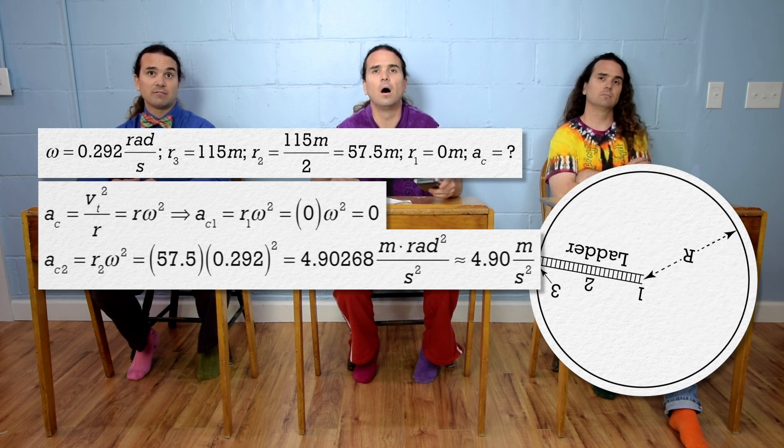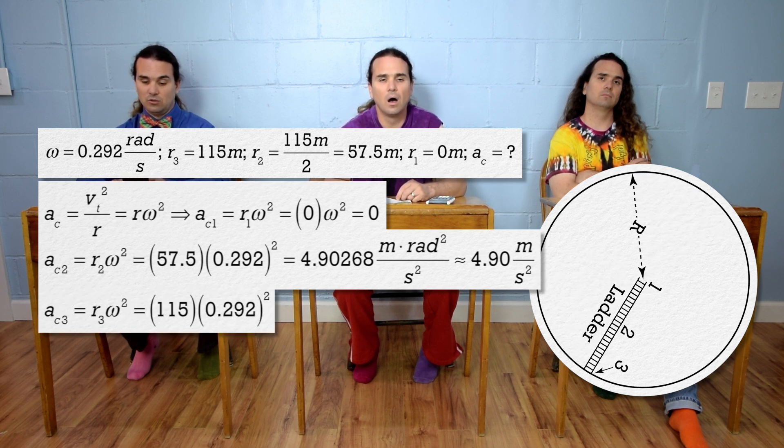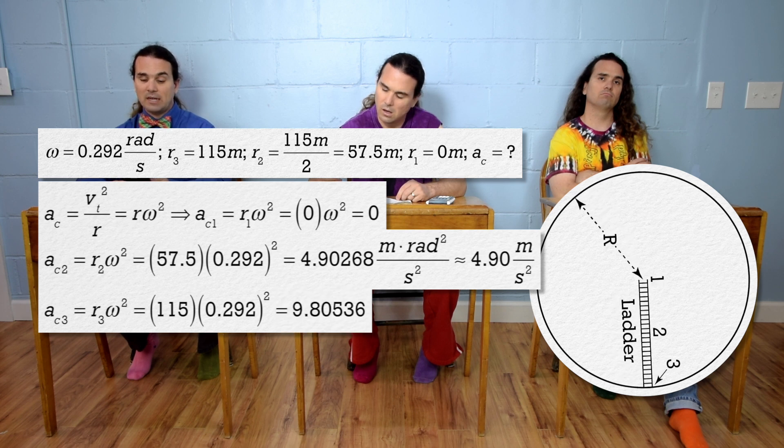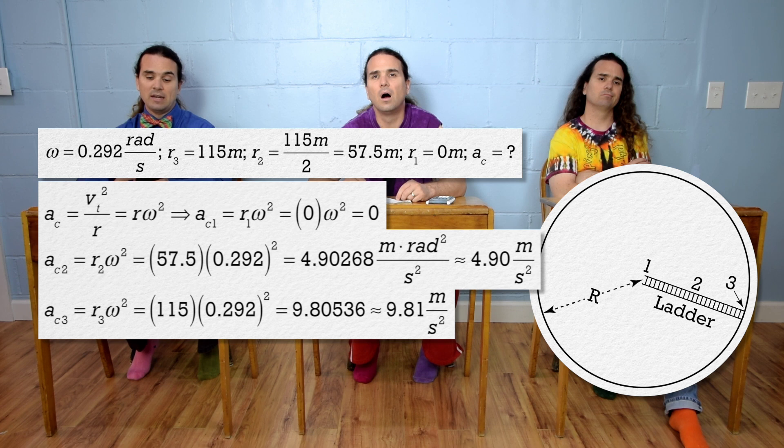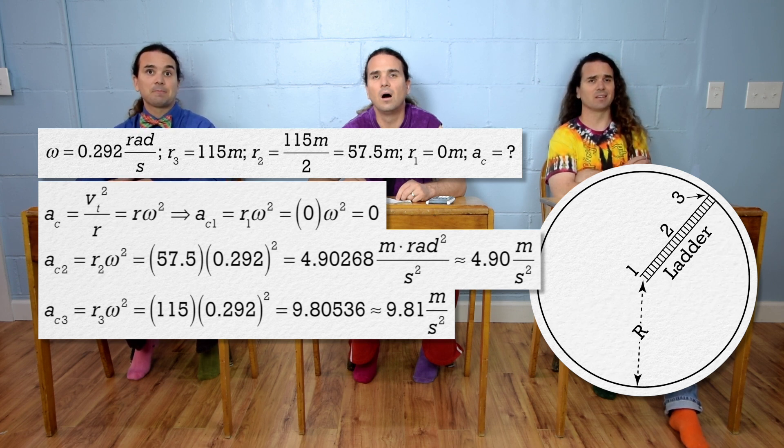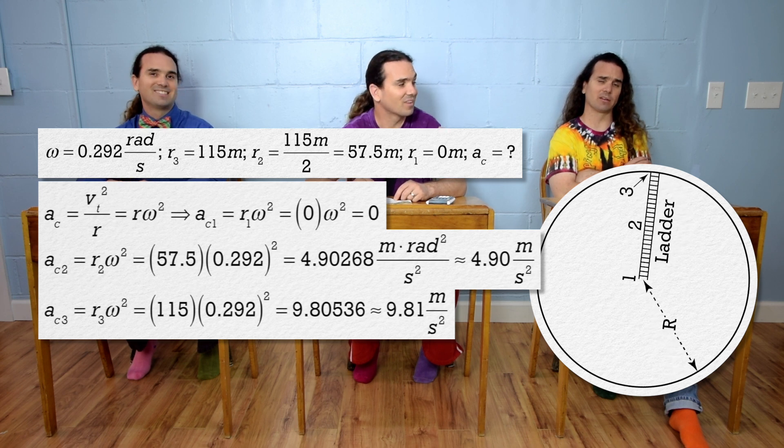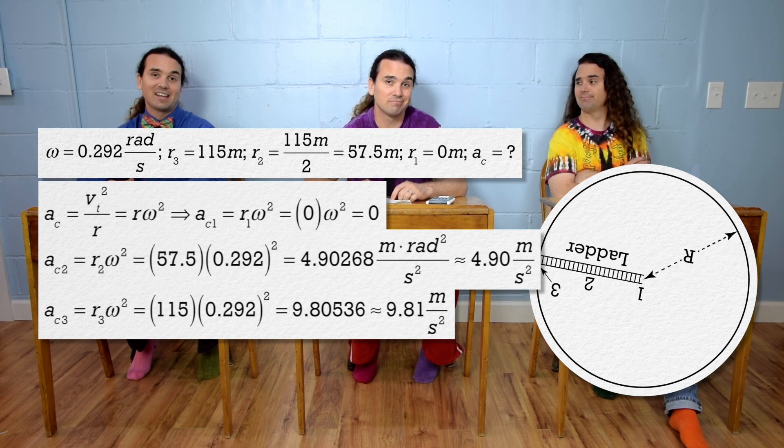The centripetal acceleration for part 3 equals 115 times 0.292 squared, which is 9.80536, or 9.81 meters per second squared, with three significant digits. 9.81 meters per second squared. Nice one, Mr. P. The acceleration due to gravity here on planet Earth. Nice.